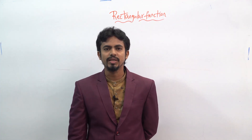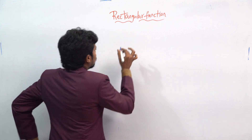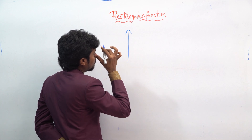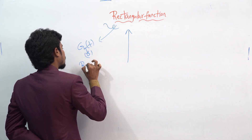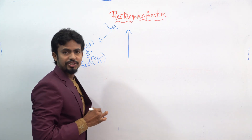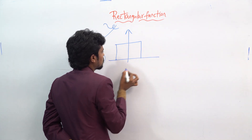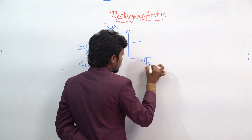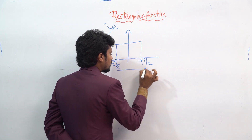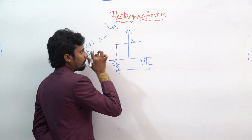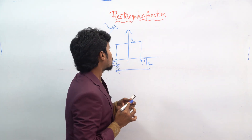Now let's see another standard continuous time signal — the rectangular function. The rectangular function can be represented as rect of small t divided by capital T. Looking at the plot, the x-axis spans from minus T by 2 to plus T by 2, and you can take the peak magnitude as 1.